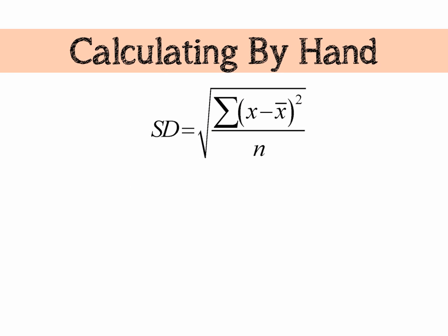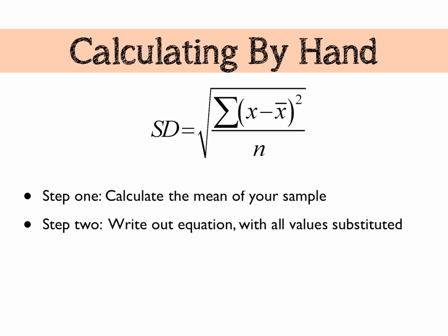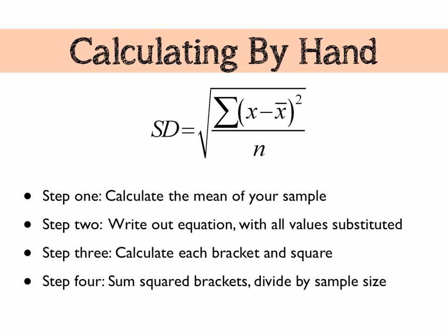So let's look at how we calculate this by hand. Your first step is to calculate X bar, which is your mean. Step two, we write out the entire equation with all the values that we have substituted in. Step three, we calculate each bracket and square it out. Step four, we sum the squared brackets and divide by the sample size. And step five, we root the lot.